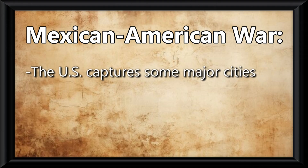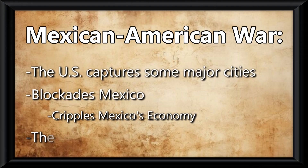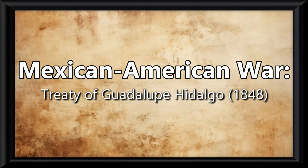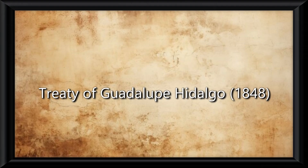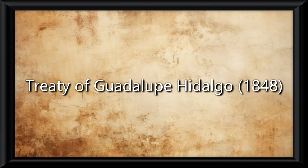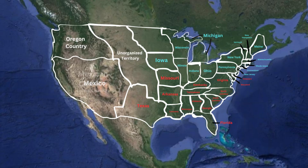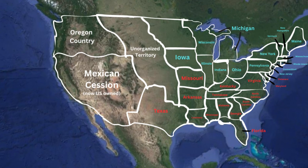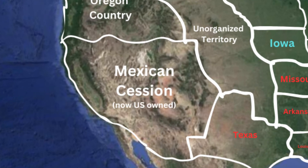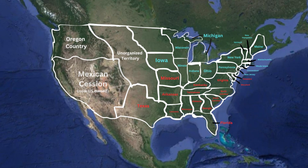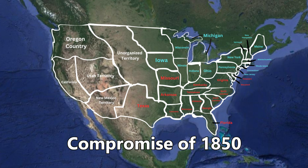After the US captured some major cities and blockaded Mexico, which crippled its economy, they ended up winning the war. This war would end with the Treaty of Guadalupe-Hidalgo in 1848. What you should know is that it gave the US a lot of land — the Mexican Cession — and the issue of whether each state would be slave or free would need to be solved further at the Compromise of 1850.